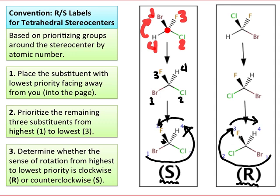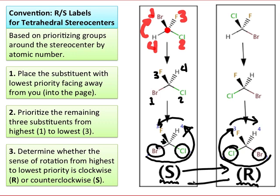You'll notice that to interchange these two configurations, we need to exchange the bromine and the chlorine. Exchanging those two atoms will convert S to R and will convert R to S.